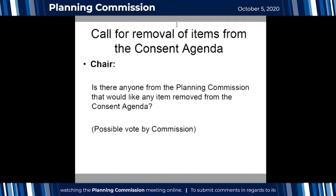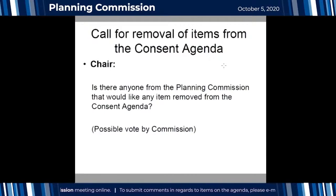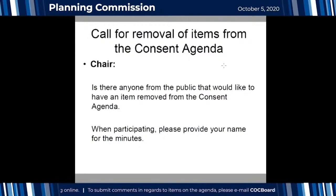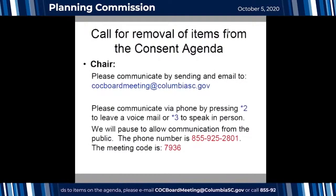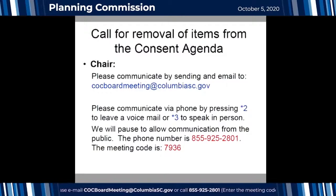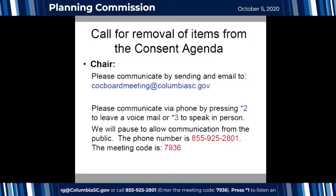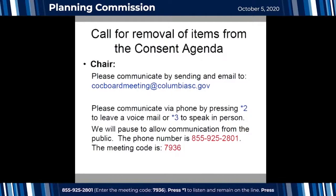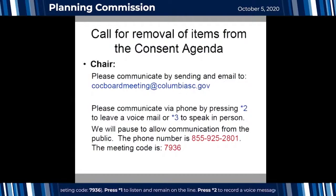The chair asks whether any Planning Commission member or member of the public would like an item removed from the consent agenda. Participants are asked to provide their name for the minutes. The public may communicate by emailing cocboardmeeting@columbiasc.gov, pressing star 2 to leave a voicemail, or star 3 to speak live. The phone number is 855-925-2801 and the meeting code is 7936.